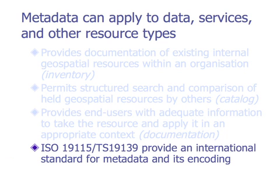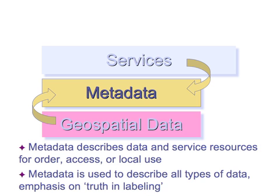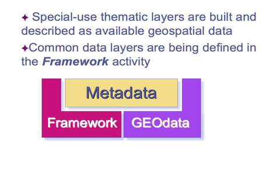ISO 19115, as mentioned, and its XML equivalent provide an international standard for metadata and its encoding. Metadata can be used to describe services and data for order, access, or local use, with an emphasis on truth and labeling. We'll have metadata for data sets that are not just official data, but also for things done for projects that may have dubious source reference — it's really important to collect how good or how bad something is. We'll categorize data into two groups: framework data, which are common data layers, and general geodata, which are other thematic data layers.